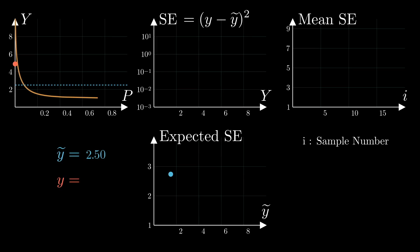Next, change the selected point y tilde to, for example, 2.5, and repeat the same process to get another point in the bottom plot.